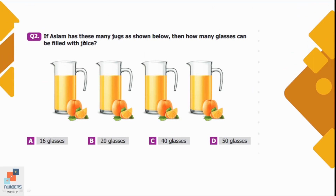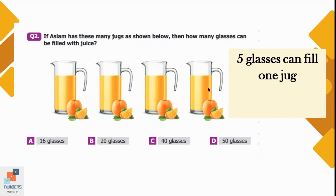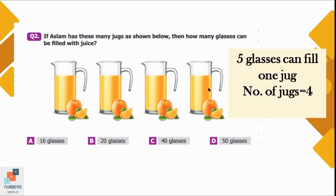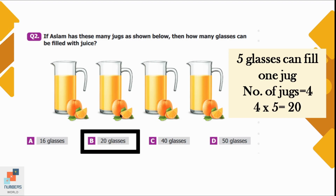Question number 2: If Aslam has these many jugs as shown below, how many glasses can be filled with juice? We know from the given information that 5 glasses can fill one jug and there are 4 jugs in total. 5 times 4 is 20, so he can fill 20 glasses. Option B is the correct option.